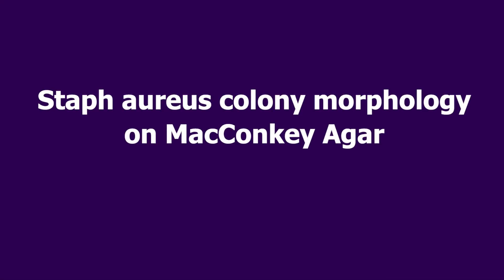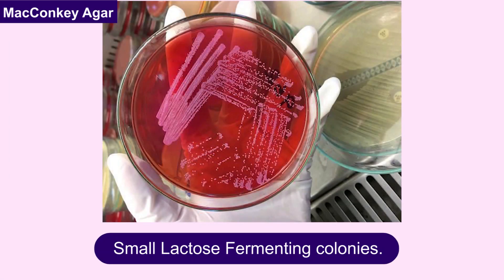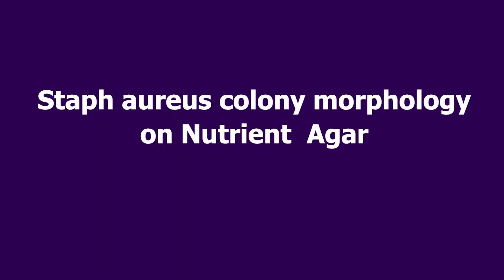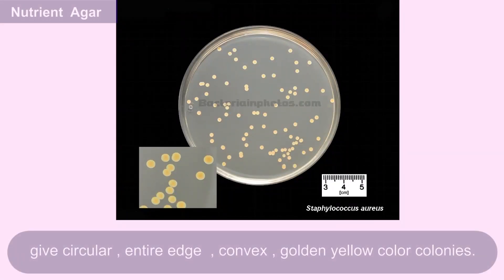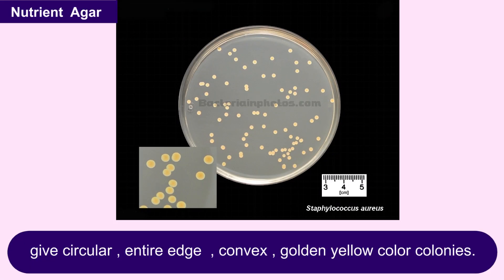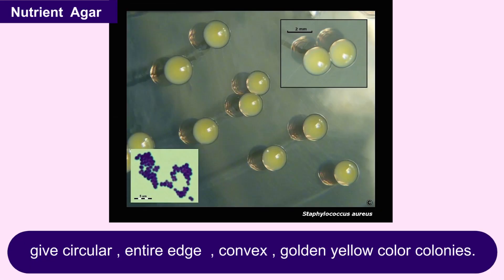On MacConkey agar, Staphylococcus aureus gives small lactose-fermenting colonies. On nutrient agar, they give circular, entire-edged, convex, golden-yellow colored colonies.